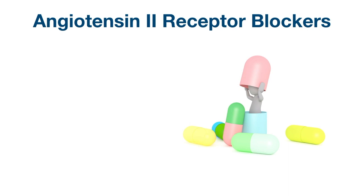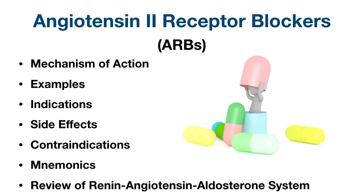Welcome back to the EZ-Med channel where medical and science topics are made easy. In this video, we're going to talk about angiotensin 2 receptor blockers, also known as ARBs. By the end of the video, you'll know their mechanism of action, example medications, indications, side effects, contraindications, and all sorts of mnemonics to remember it all.